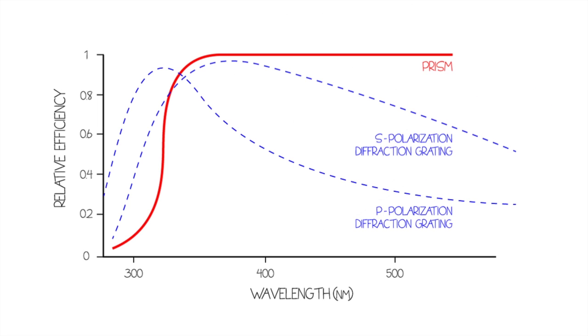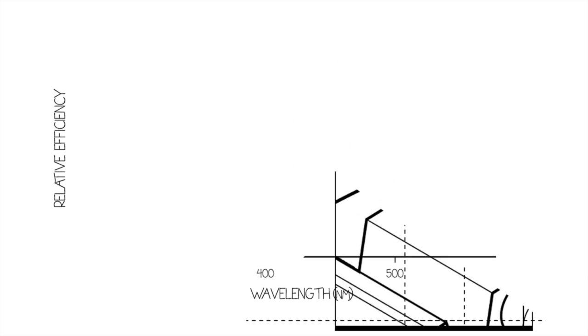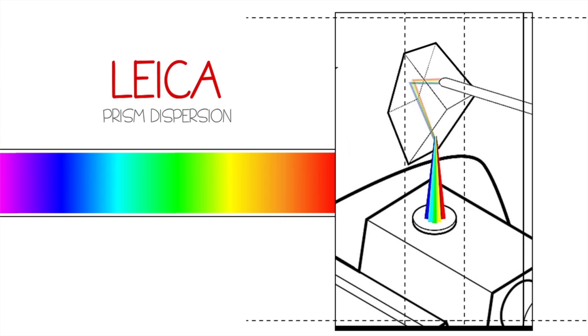Further complicating diffraction grating efficiency is that it is polarization dependent. Prism dispersion, as used by Leica Microsystems, is spectrally flat, transmitting light effectively and without polarization dependence across the entire spectrum.